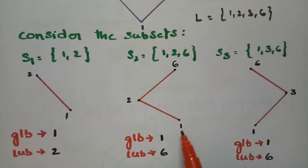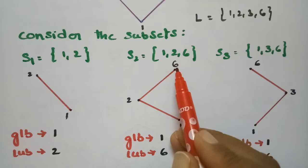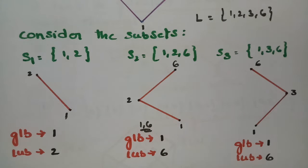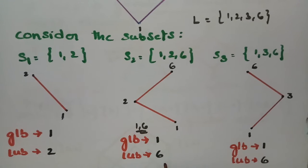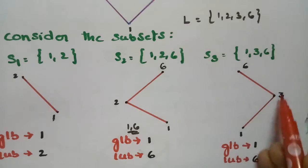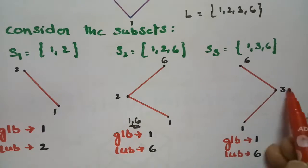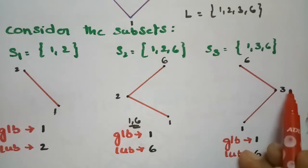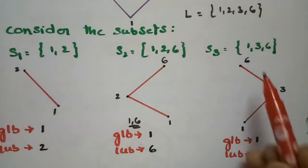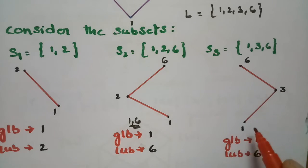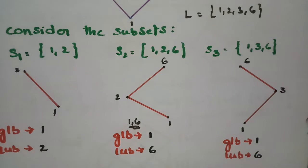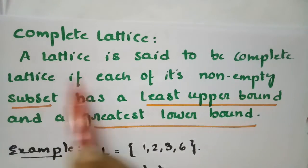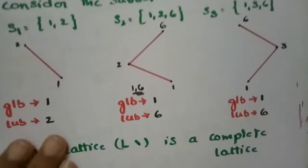For subset {1, 3, 6}: 1 divides 3 and 3 divides 6. Taking elements 1 and 3: GLB is 1, LUB is 3. Taking 3 and 6: GLB is 3, LUB is 6. Taking 1 and 6: GLB is 1, LUB is 6. Since every subset has a least upper bound and greatest lower bound, the given lattice is a complete lattice.